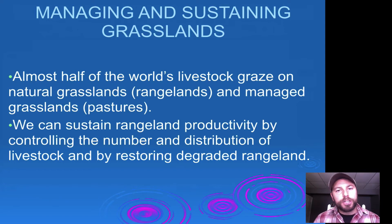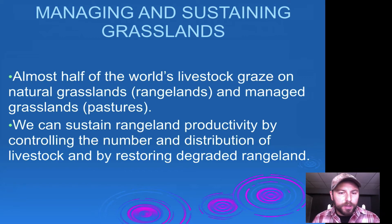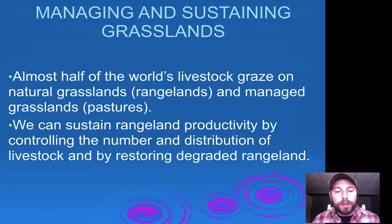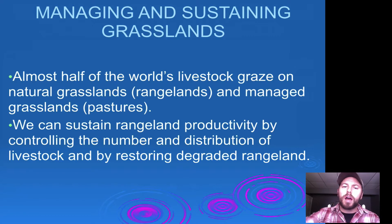Switching gears from tropical rainforests, we're going to look at grasslands. Grasslands are heavily impacted by livestock and grazing. There are natural grasslands called rangelands and managed grasslands known as pastures. We can sustain rangeland productivity by controlling the number and distribution of livestock and by restoring degraded rangeland. One cool approach uses satellites to monitor the productivity of certain grasslands and move herds into different areas so they do not overgraze.